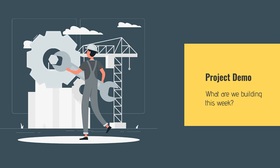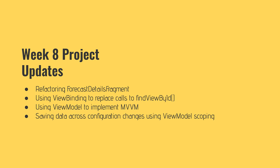For our project demo — now for the last eight weeks or so, this would be the point where I jump over to the emulator and walk through the new functionality we're adding. However, this week the app looks pretty much exactly the same. We're not updating anything to the UI this week. All the changes are going to be internal — more of how we're structuring our code. We're focusing exclusively on refactoring the forecast details fragment: using view binding to replace findViewByID calls, introducing the ViewModel for a simple MVVM architecture, and saving data across configuration changes using ViewModel scoping.